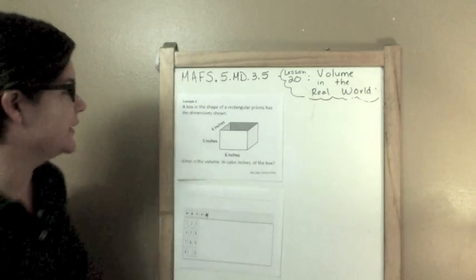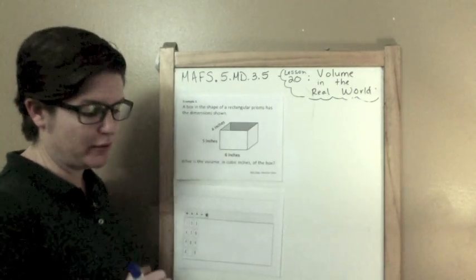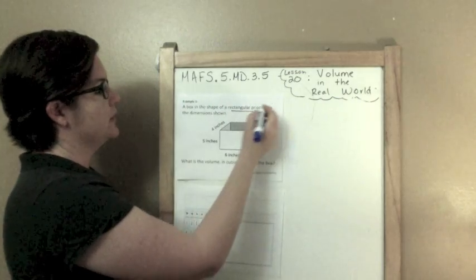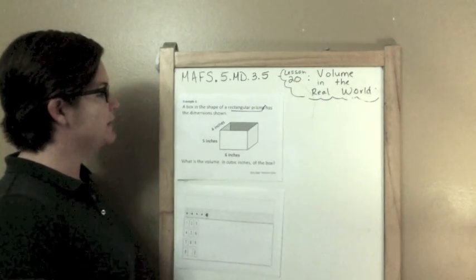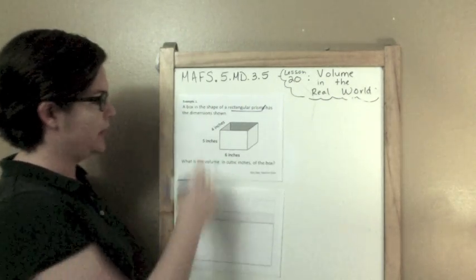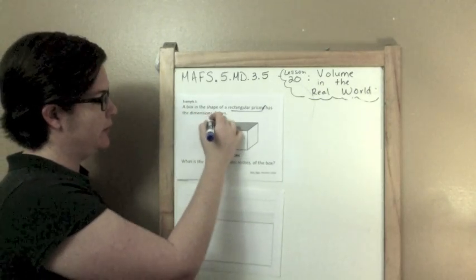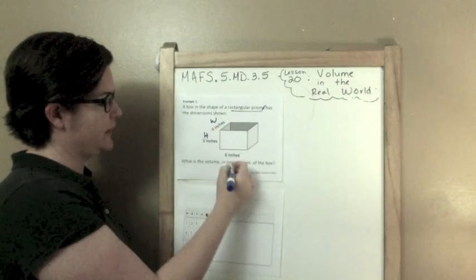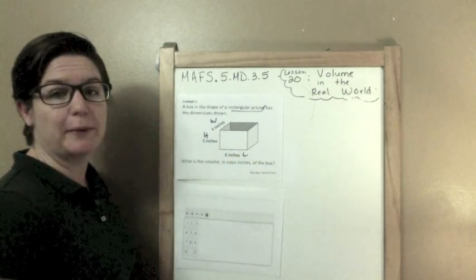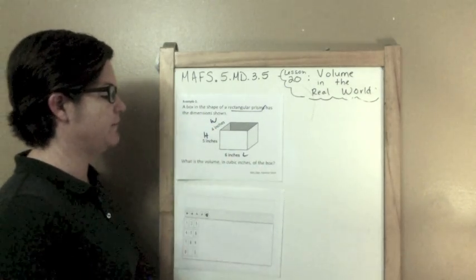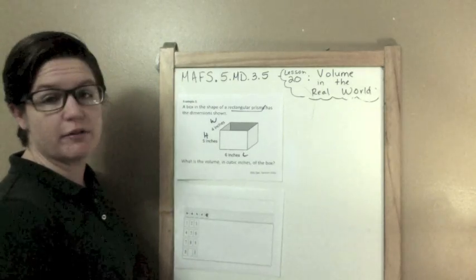Example 1. A box in the shape of a rectangular prism has the dimensions shown: 4 inches for the width, 5 inches for the height, and 6 inches for our length. What is the volume in cubic inches of the box?